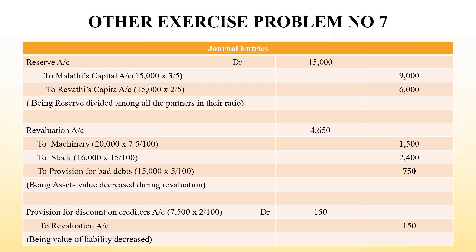9,000 for Malathi and 6,000 for Revathi. Next, if any asset's book value decreases, we post it to the debit side of the revaluation account. Since it is a ledger, whatever we debit here will come on the credit side there. So we debit the revaluation account and credit machinery account - that is a 7.5% depreciation, which is 1,500. Stock depreciation at 15% is 2,400 rupees. Provision for bad debts - this is an amount set aside for debts that may not be received, which is a loss - calculated at 5%, that is 750 rupees.